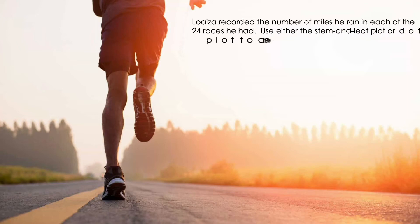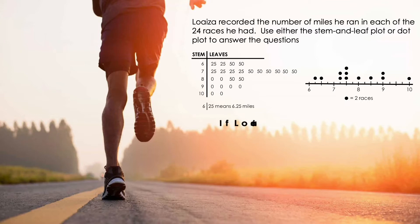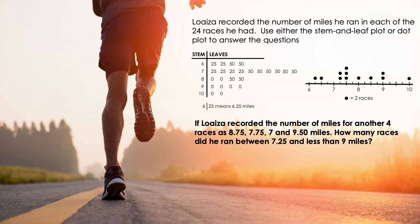Loaiza recorded the number of miles he ran in each of the 24 races he had, using either the stem-and-leaf plot or dot plot to answer the questions. If Loaiza recorded the number of miles for another 4 races as 8.75, 7.75, 7.9, and 9.50 miles, how many races did he run between 7.25 and less than 9 miles?